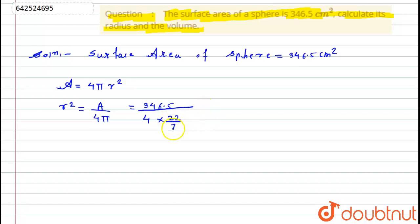So this 7 will go up and multiply with this. When I will divide this term by 4, I will get 86.625. So here it will be 86.625 into 7 divided by 22.